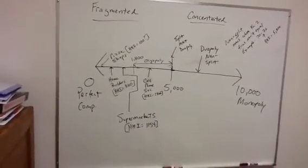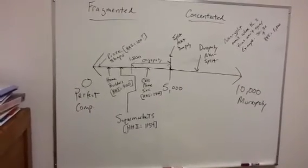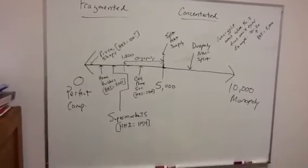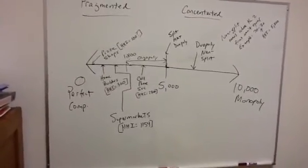Home builders, about 300, again, very, very fragmented. As I said the other day, we have 35,000 home builders, of which only 12 have more than 1% market share. So, 34,988 are so tiny that we wouldn't even include them in the Herfindahl measure.